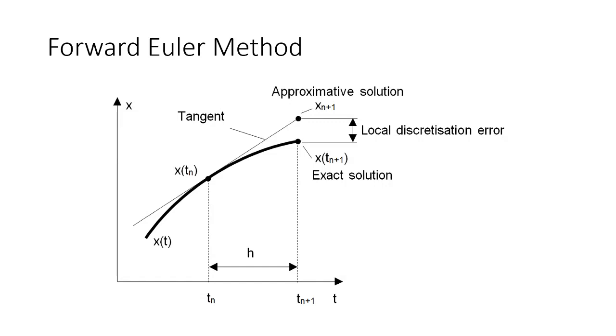And then this is just a visual representation of what we're doing with the forward Euler method. So we have some known point here at a given t_n, and we're saying we want to approximate our solution at the next time step. In this case, their function is x instead of y.